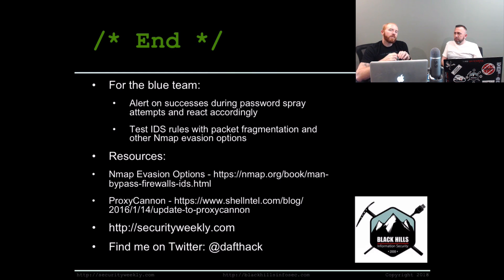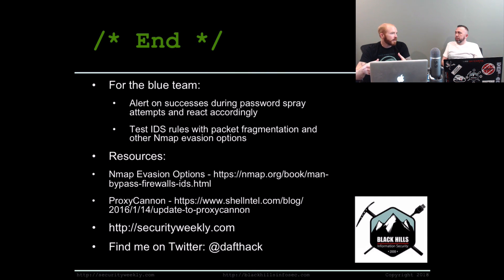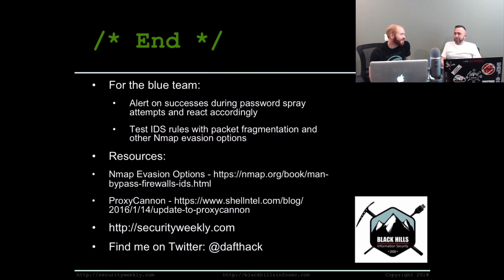That's it for this edition of Tradecraft Security Weekly. One last note for the blue team: on a recent password spray against an organization, I found they did a really good job of detecting and alerting on successes — they were looking not just at specific IPs, but coordinating multiple failed attempts with successes sprinkled in, and basically resetting those accounts immediately. Also, if you have an internal IDS like Snort, go run Nmap with the different fragmentation options and see what you can modify to detect them better. Test this stuff yourself. We have resources for ProxyCannon and the different Nmap evasion options. You can find us on Twitter — he is YouStayReady. Thanks for coming over and hanging out. We'll catch you next week.